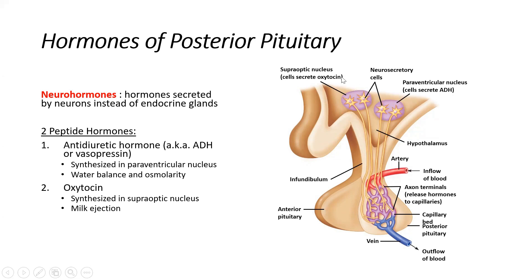The function of ADH or vasopressin involves water balance and osmolarity — it tells our kidneys to conserve more water, to hold on to water. That's why it's called antidiuretic: preventing the loss of water. Oxytocin, on the other hand, is involved in milk ejection, which is completely different from milk production. Prolactin, another hormone we'll discuss later, is involved in milk production from the breast glands, but milk ejection is a function of oxytocin coming from the posterior pituitary.